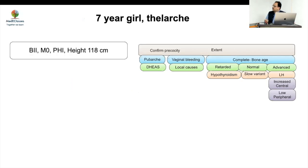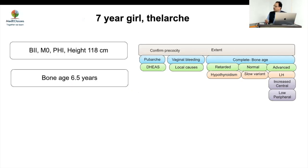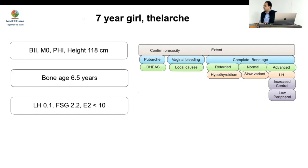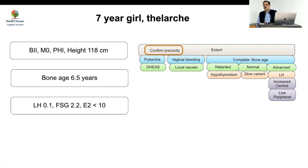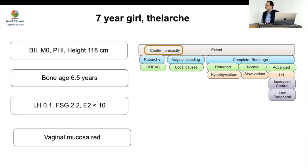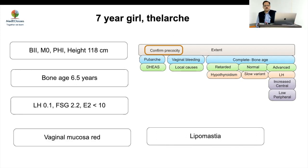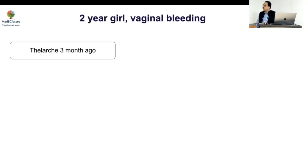Case 1: A 7-year-old girl with thelarche, height 118 cm, bone age 6.5 years, LH 0.1, FSH 2.2, estradiol low. Bone age is not advanced, height is not advanced — this is likely lipomastia. No workup and no management are required.